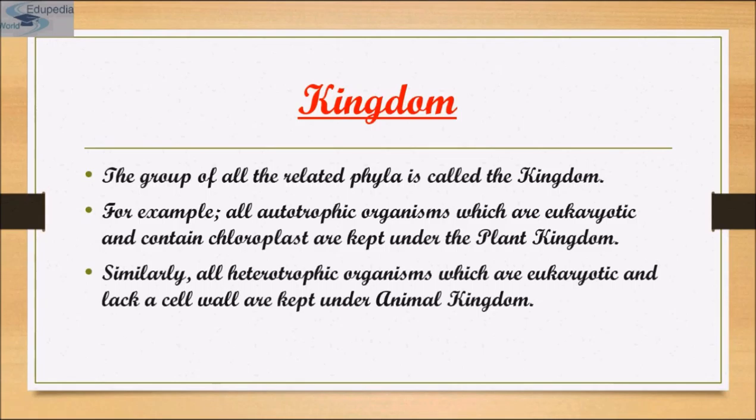These are broad categories. For example, all autotrophic organisms that are eukaryotic and contain chloroplasts are kept under the plant kingdom. Similarly, all heterotrophic organisms that are eukaryotic and lack a cell wall are kept under the animal kingdom.